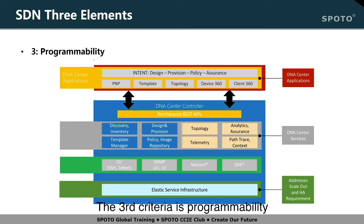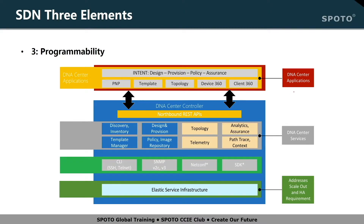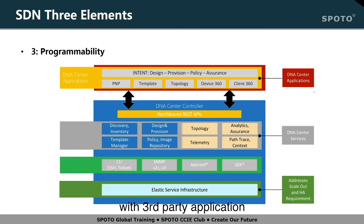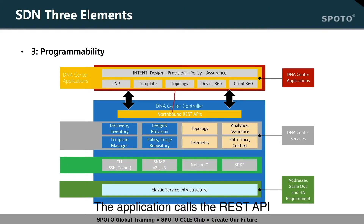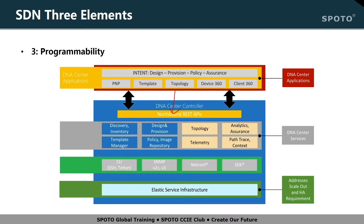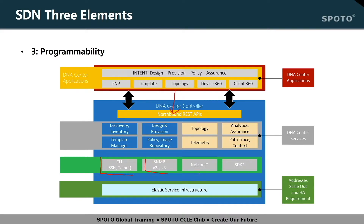The third criterion is programmability — the entire solution needs to be programmable. At the top, the DNA Center applications allow you to write your own application or integrate with third-party applications. It can have PnP, plug and play, to discover the hardware. You can implement network solution templates, define the network topology, and have an overview of devices. At the northbound, applications call the REST API. From the southbound, you can still use CLI, SSH, Telnet, or SNMP version 2 and 3, as well as Netconf and SDK.